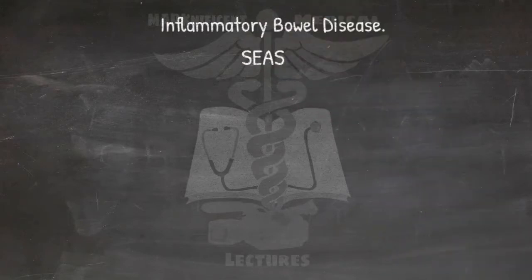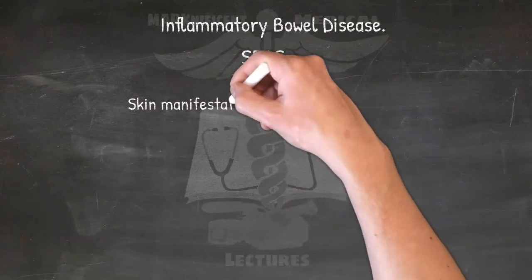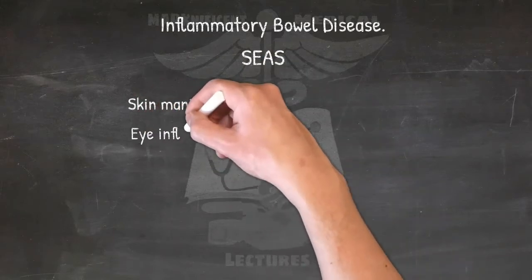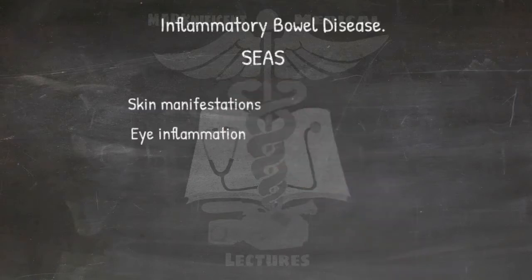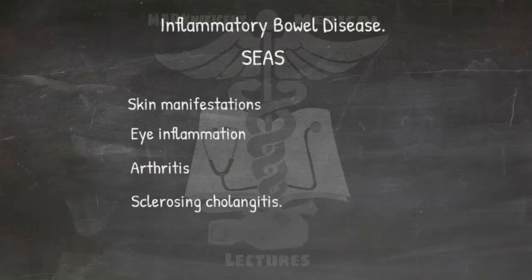The extraintestinal manifestations of inflammatory bowel disease (IBD): left intestine to sail the seas of the rest of the body. Skin manifestations include erythema nodosum and pyoderma gangrenosum. Eye inflammation includes iritis and episcleritis. Then arthritis and sclerosing cholangitis.